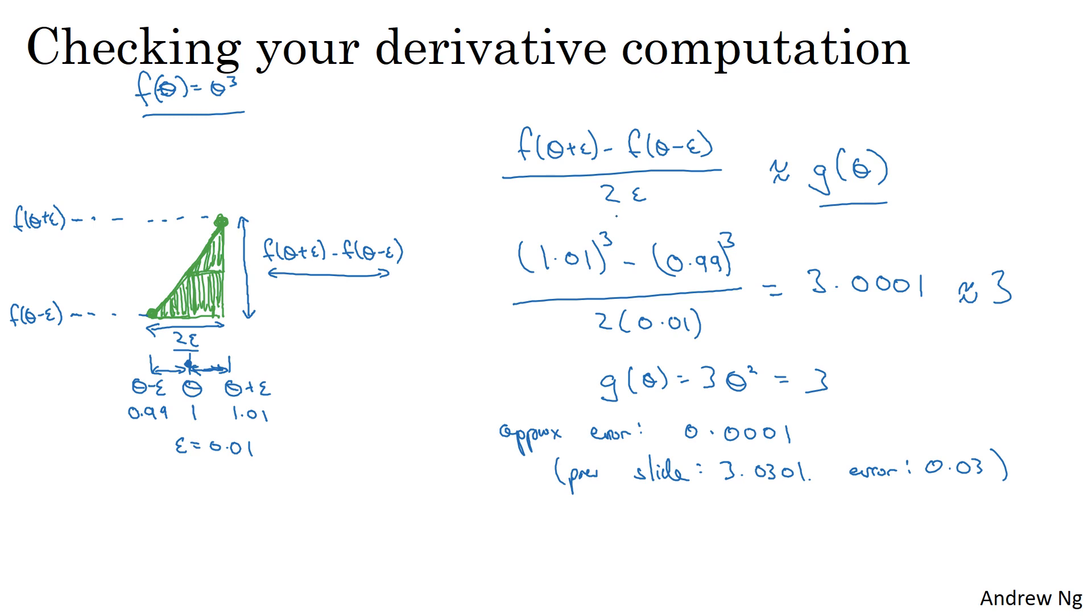When you use this method for gradient checking and back propagation, this turns out to run twice as slow as you were to use a one-sided difference. It turns out that in practice I think it's worth it to use this other method because it's just much more accurate.